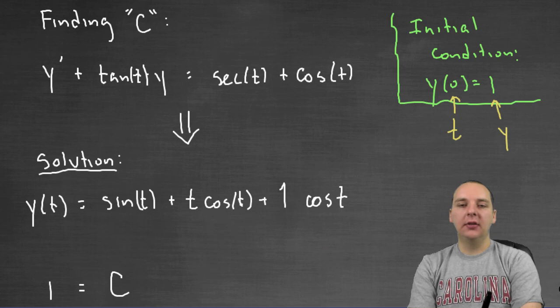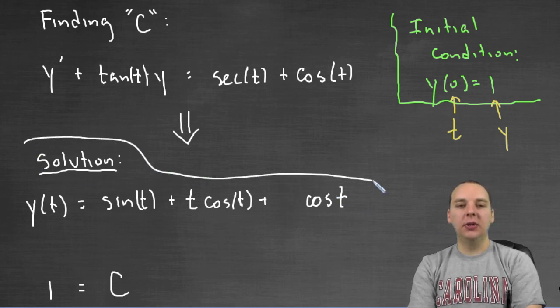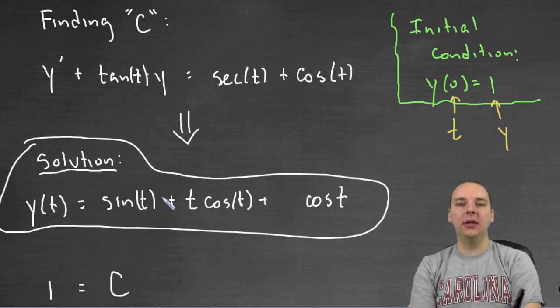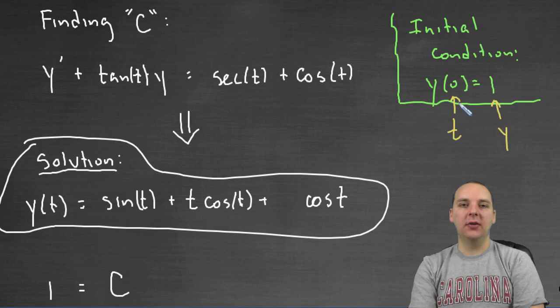You could just leave it plus cosine t, and that would suffice. So this would be a solution to the differential equation which specifically satisfies this initial condition right here.